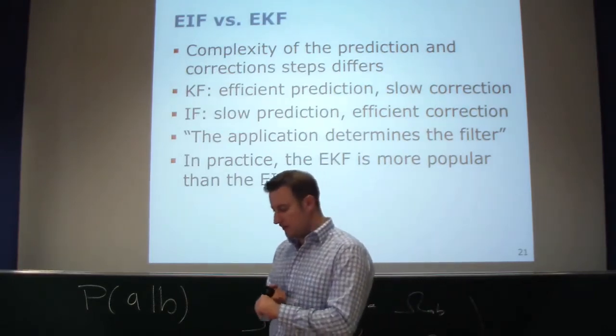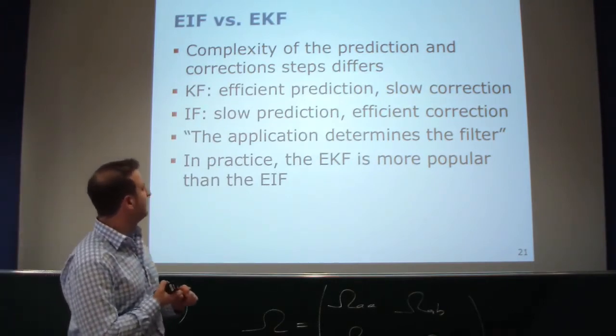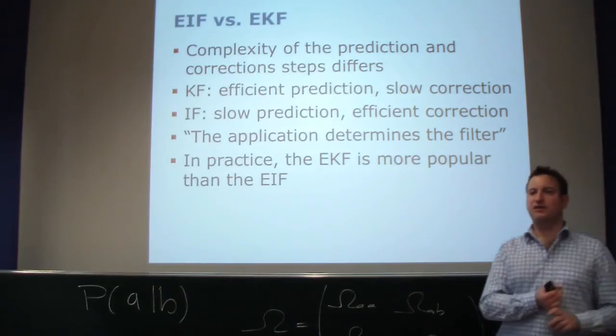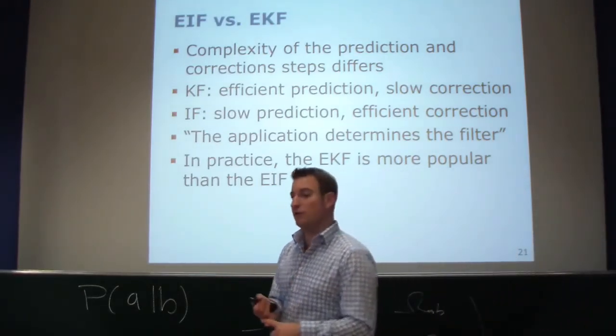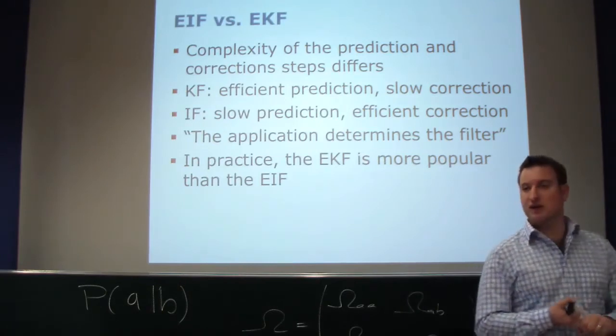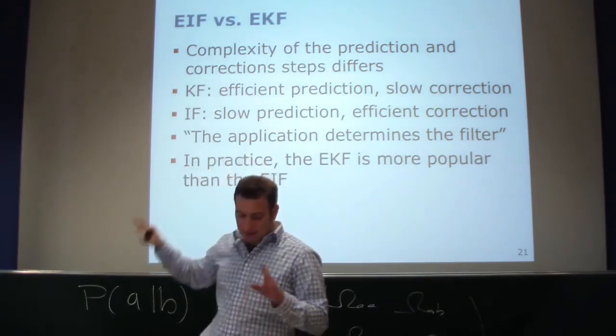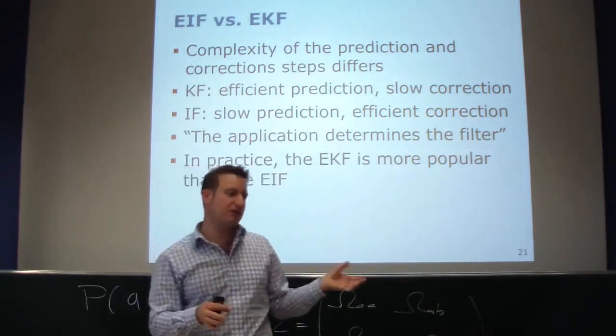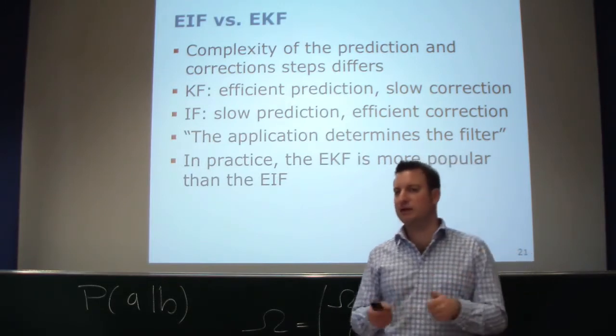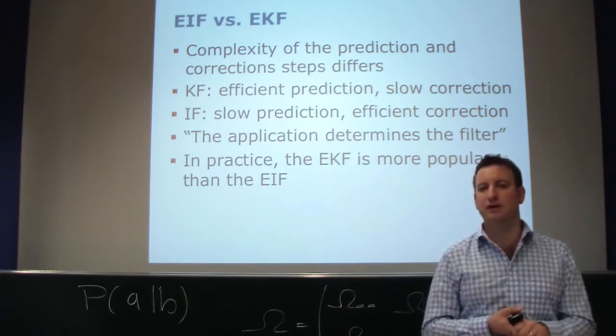The overall complexity is similar or the same. The Kalman filter, or the extended Kalman filter, has an efficient prediction and a slow correction or measurement update step, whereas it's typically the other way around for the information filter, where you have a slow prediction and an effective measurement update step. The application you have determines which filter you're actually using. If you look to the SLAM problem, the prediction step can actually be done in a more efficient way due to the separation of the robot's motion and the landmarks. So often the EKF is a better choice than the EIF. If you look to practical applications, the extended Kalman filter is much more popular than the EIF.